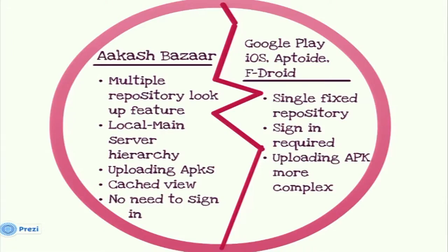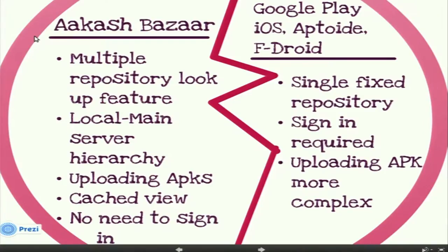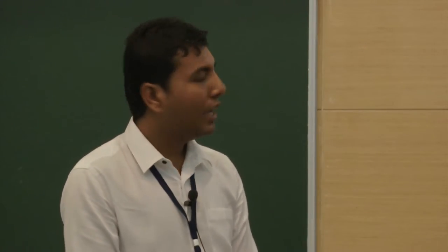Here is the basic difference between Akash Bazaar and other app stores. Akash Bazaar supports a multiple repository lookup system — a user can manually add as many repositories as they want, all assigned priority, and downloads proceed as per the priority assigned. There is a local-main server hierarchy with local servers set up in colleges and the main server at IIT. Uploading APKs directly from the application itself is a unique feature, and all app details are cached and can be viewed offline. There is no need to sign in to install apps, but signing in is required for uploading.